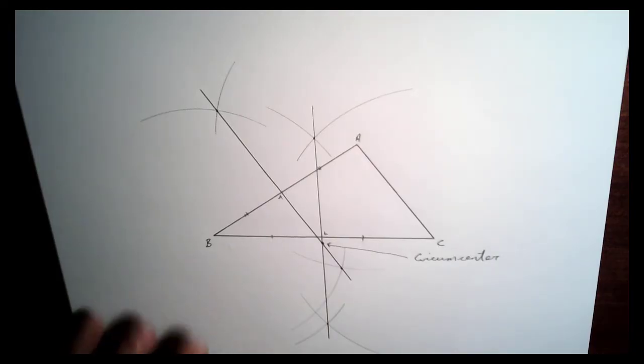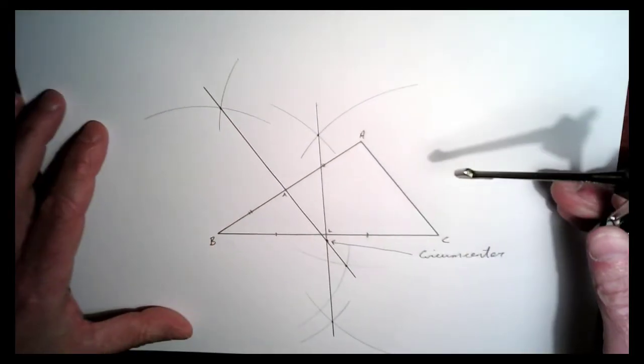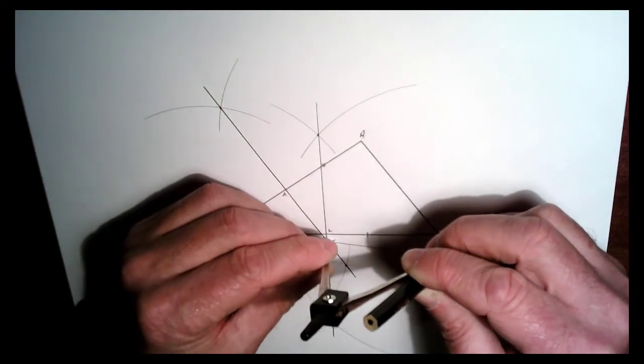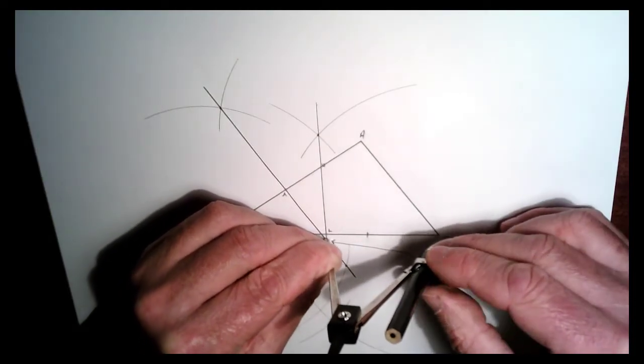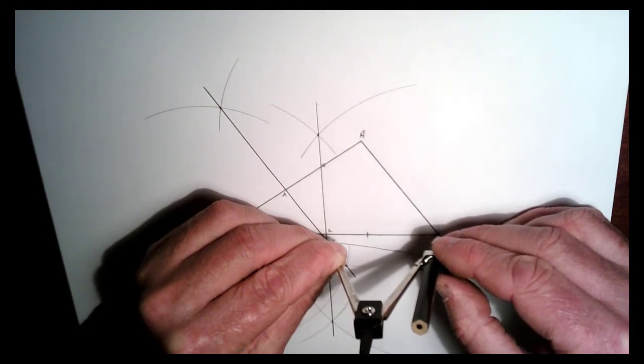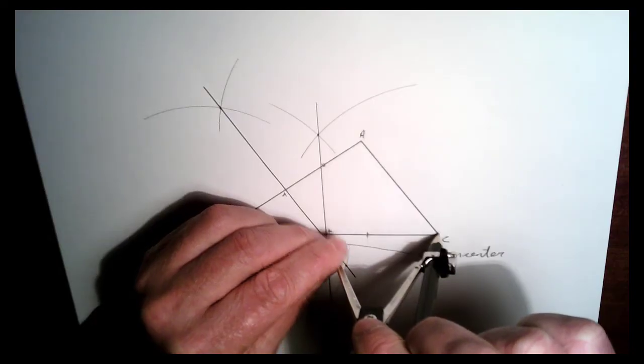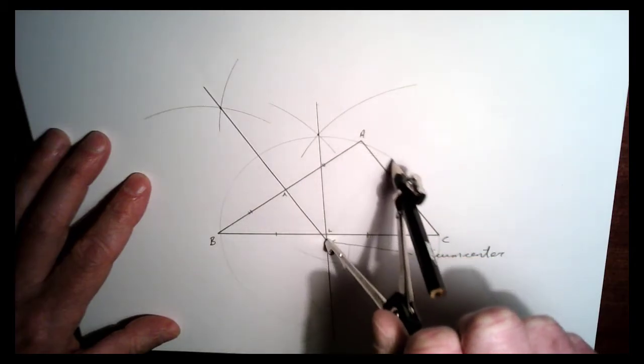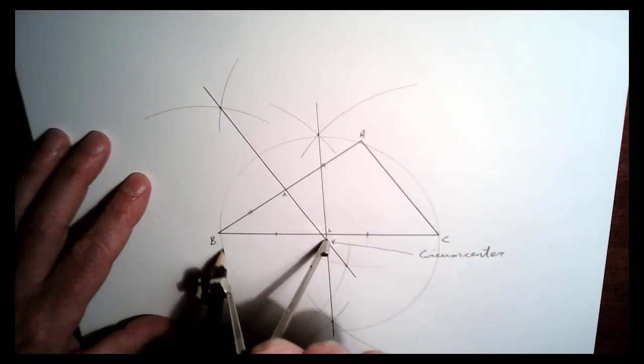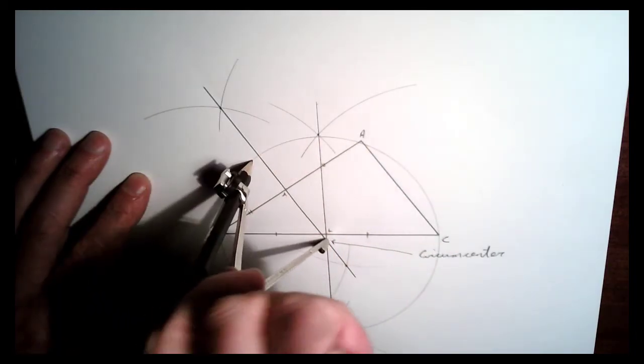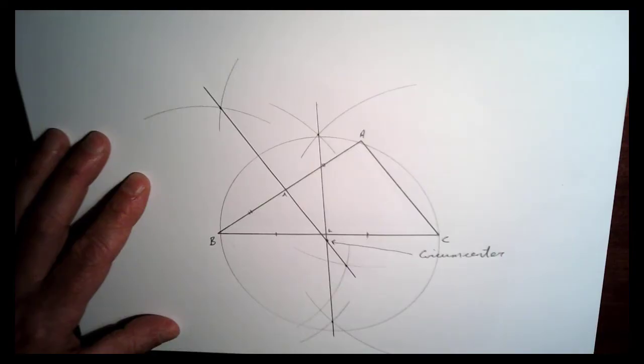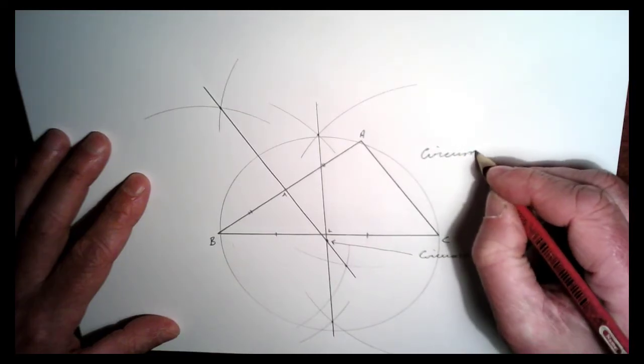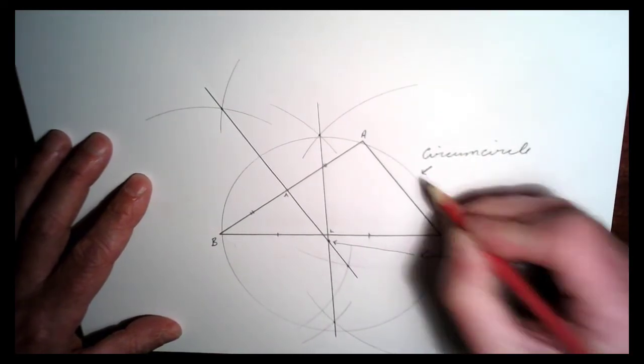Okay, so let's construct our circumcircle now. So what you do is you put your compass at your circumcenter. So place it there where the two perpendicular bisectors intersect. Bring your pencil out to one of the vertices of the triangle. Let's say C in this case. And you just draw a circle. So draw your circle around here. It should hit the three vertices if you've done it accurately enough. Okay, so that's our circumcircle. This is our circumcircle here.